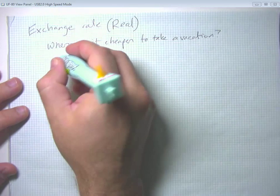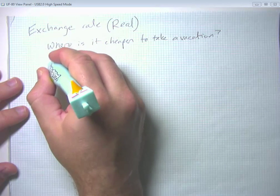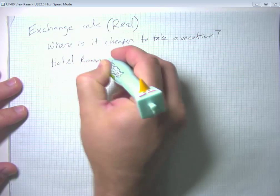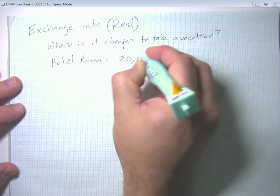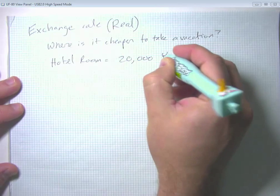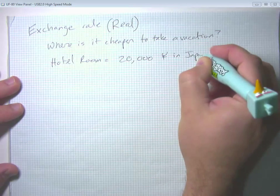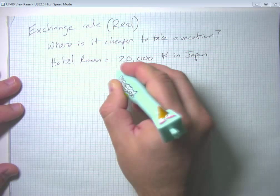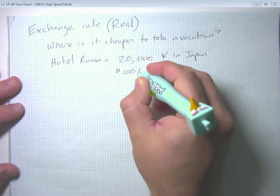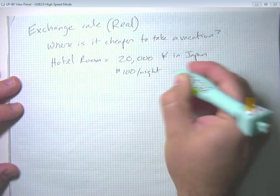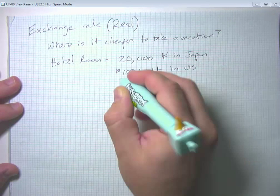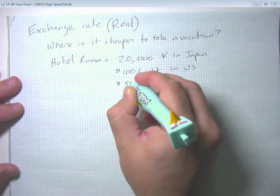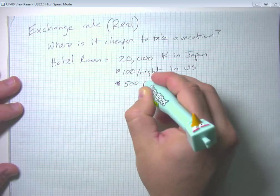So let's go ahead and make up a situation where a hotel room is 20,000 yen per night in Japan. And the equivalent hotel room is 100 dollars a night in the US, and 500 pesos per night in Mexico.